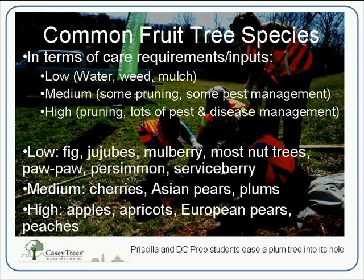In terms of management tiers: low management — basically watering, weeding, and some mulching — covers figs, jujubes, mulberries, most nut trees, pawpaws, persimmons, and serviceberries. I've mainly been pushing the low maintenance trees, especially for your first planting — both as a great educational tool to show people these lesser-known fruits, and to help people get a handle on what fruit trees take. Medium maintenance includes cherries, Asian pears, and plums — some pruning and some pest management. High maintenance includes apples, apricots, European pears, and peaches. I want to distinguish between Asian pears and European pears — a lot of people recommend not planting European pears because of a nasty disease called fire blight, which can be devastating. Asian pears are very resistant to fire blight, more hardy, and I'm really pushing people toward Asian pears.